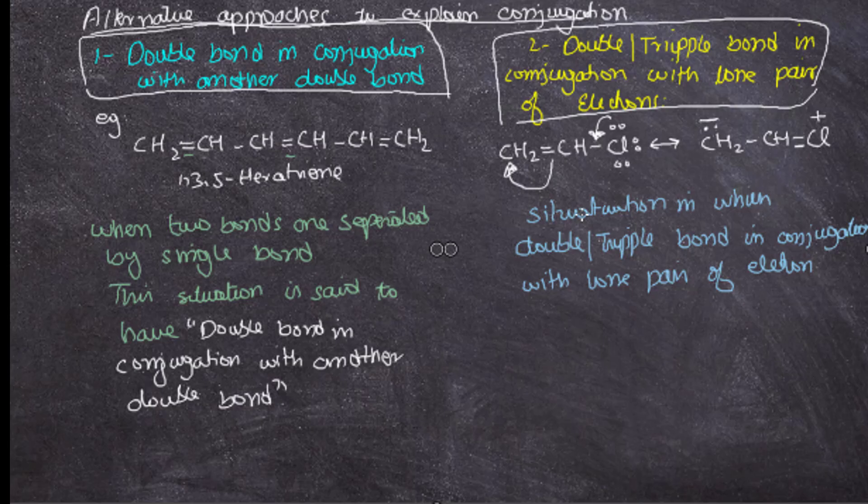So chlorine gets a positive charge and the carbon gets a negative charge. This is the situation in which double or triple bond is in conjugation with lone pair of electrons. Thank you very much. Keep subscribed to our channel. Allah Hafiz.